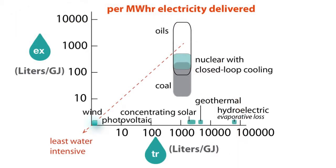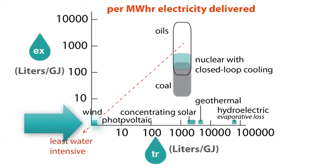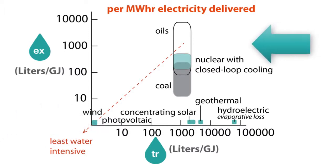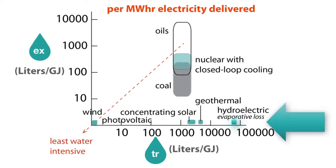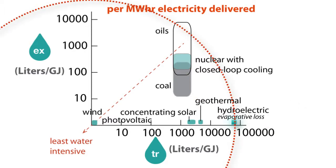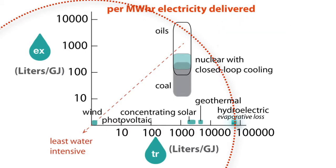Notice that electricity from photovoltaics requires the least water per gigajoule, while in general, fossil fuels and nuclear power represent the largest water consumed per gigajoule of electricity produced. Coal and geothermal are about the same. Hydroelectric uses about an equivalent amount of water per gigajoule produced as fossil fuels, if you consider the water that is evaporated from the open surface of a body of water.